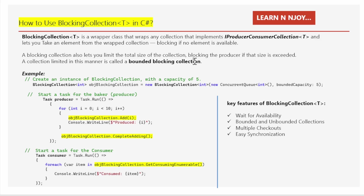This is what happens when you call Take on a BlockingCollection<T>. You are saying: I will wait here until something is ready for me to take. Now let's understand the code snippet — how we are going to use BlockingCollection<T> in C#.